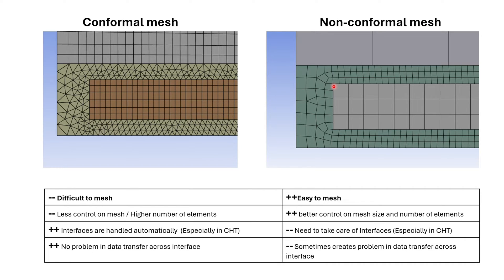For example, I was doing a simulation for porous media. In that case I had a non-conformal mesh and was experiencing divergence at the interface. When I switched to conformal mesh — everything else being the same — I got the results. So these are some advantages and disadvantages for both types of meshes. I prefer conformal mesh, but it is not always possible, so sometimes I switch to non-conformal mesh.